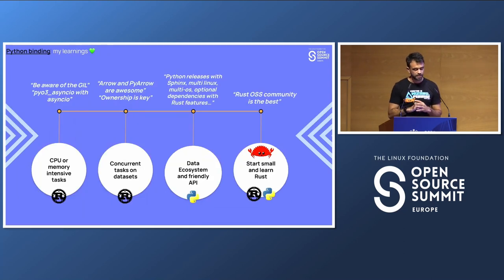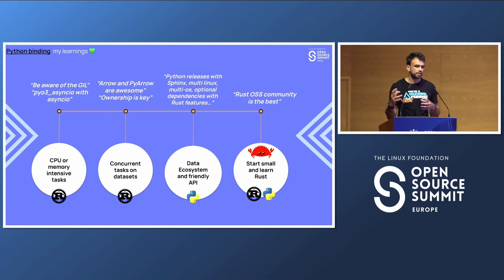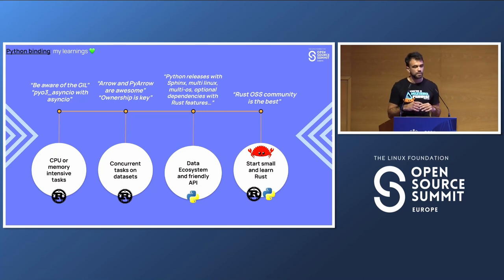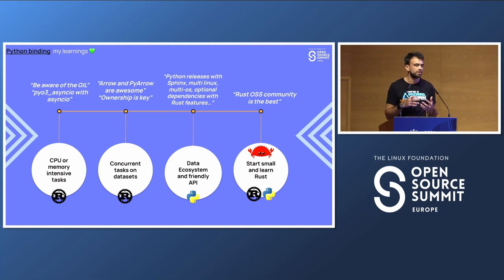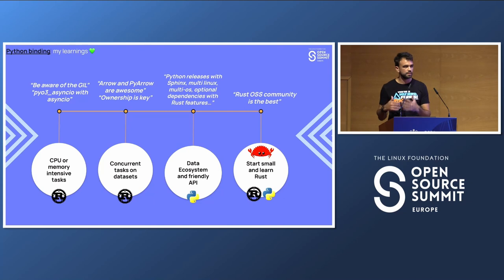My learnings from this journey: when thinking about a Python-Rust library, consider CPU or memory intensive tasks and implement them in Rust. Be aware of the Global Interpreter Lock (GIL) — you can improve things by making calls fully asynchronous using PyO3 with AsyncIO to call the Rust codebase without blocking. Also, when sharing objects between Python and Rust, you don't have to think too much about the GIL, but if you're calling Python from Rust, you need to acquire the GIL to avoid memory leaks. For more intensive memory management, use smart pointers.